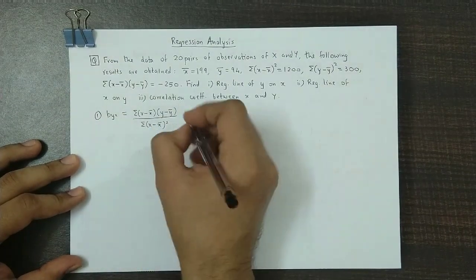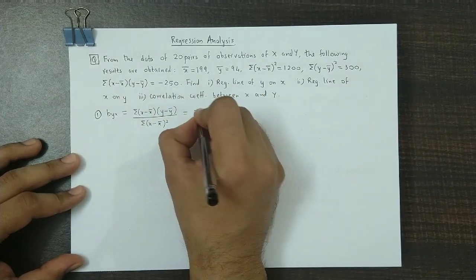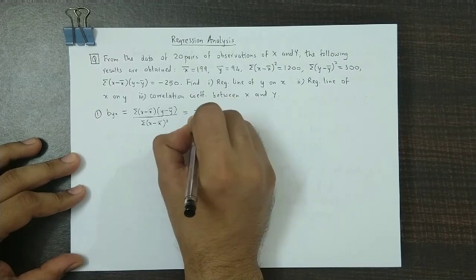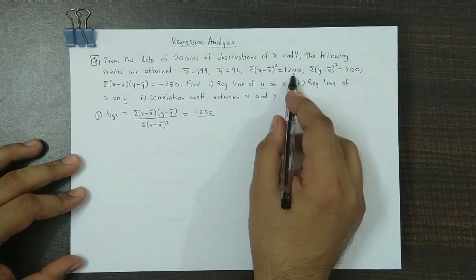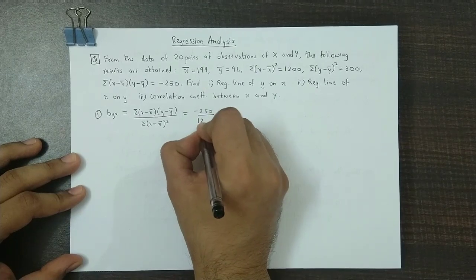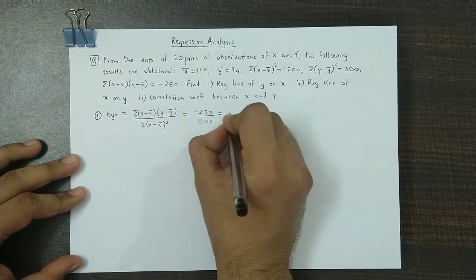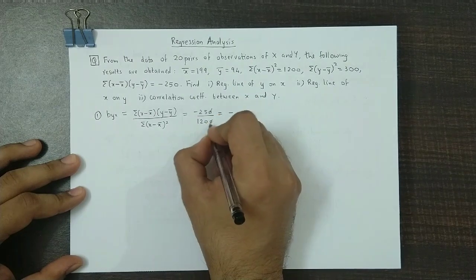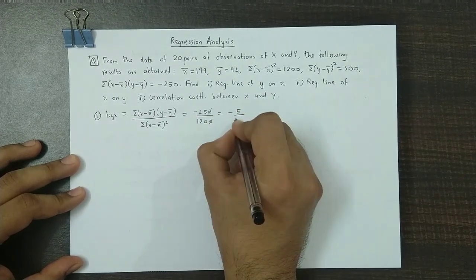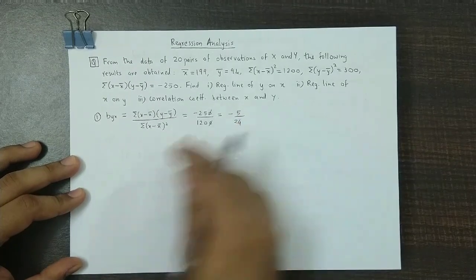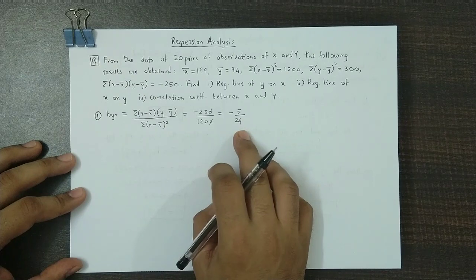This numerator total has been given as minus 250, and the denominator total is 1200. Simplifying, we cancel common factors. The value for byx is minus 5 by 24.